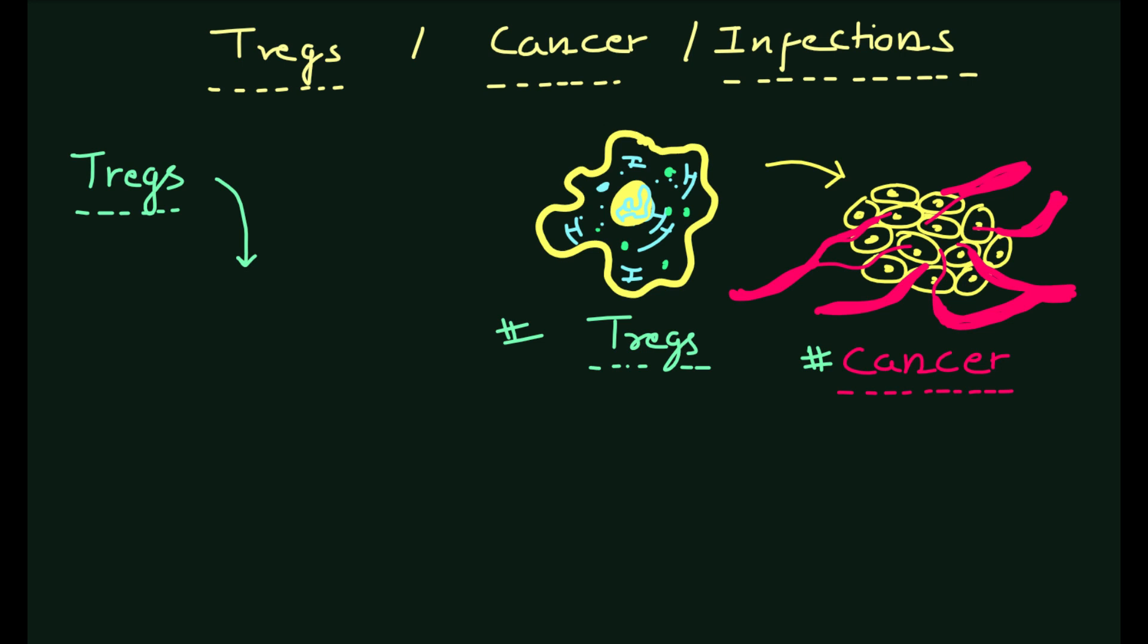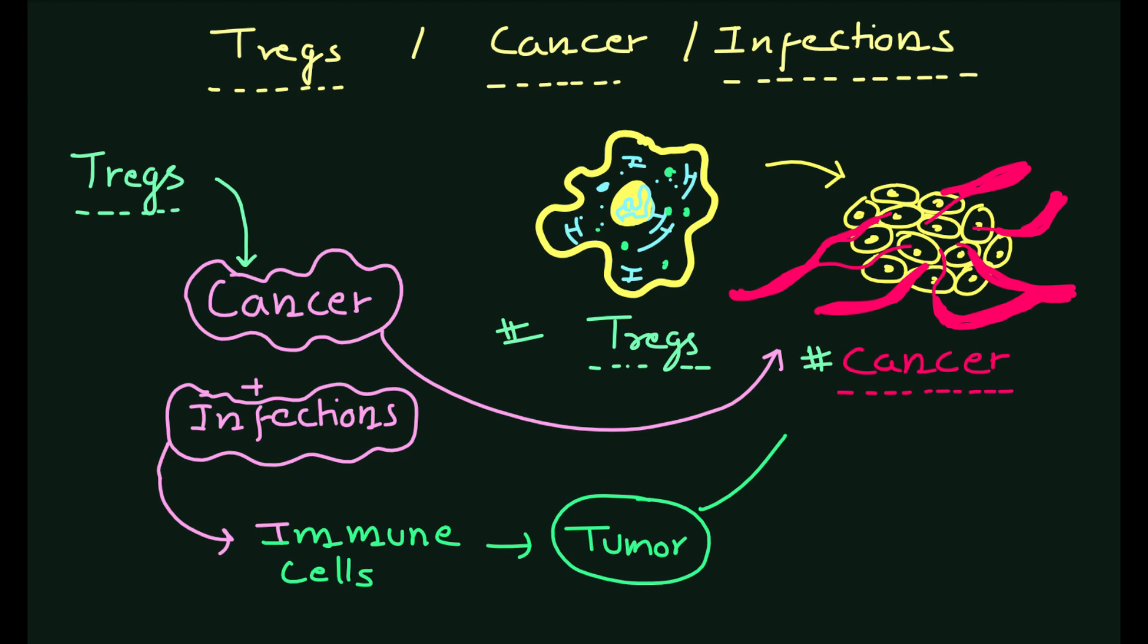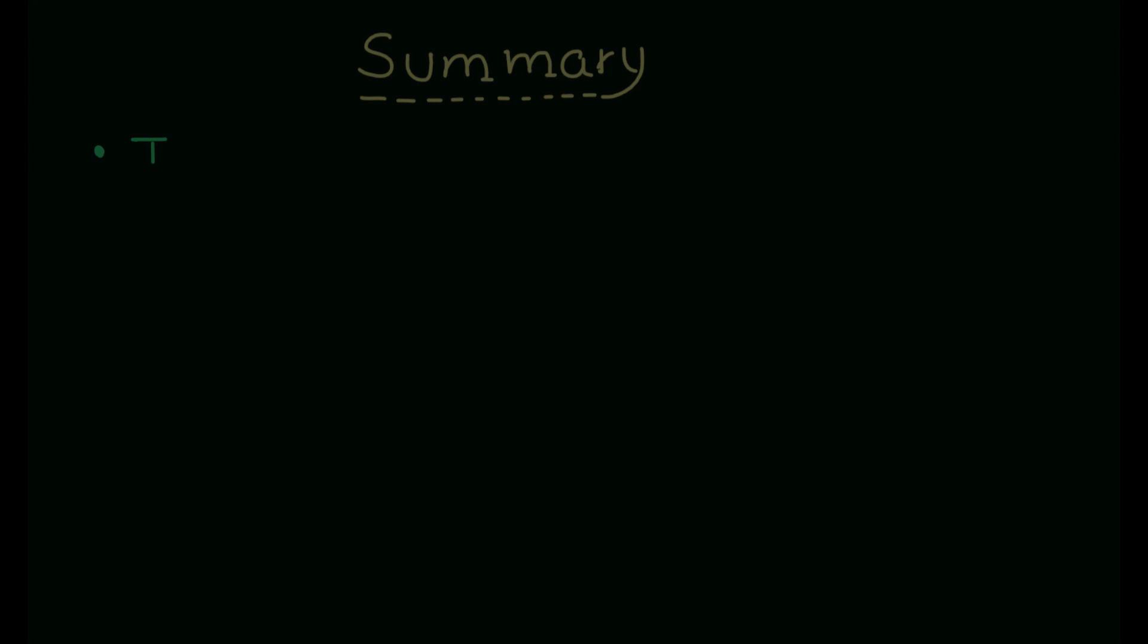Finally, Tregs have been shown to play a crucial role in regulating cancer and infections. By suppressing the activity of immune cells that would otherwise target tumor cells or pathogens, Tregs can prevent immune-mediated damage to host tissues and promote immune tolerance.